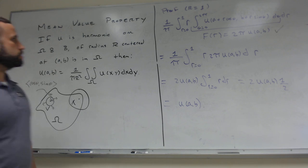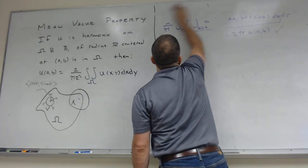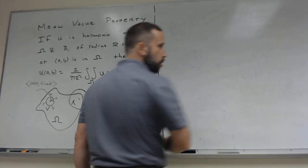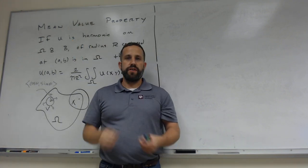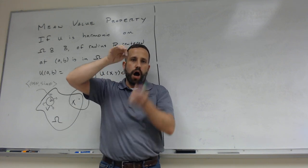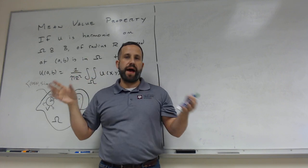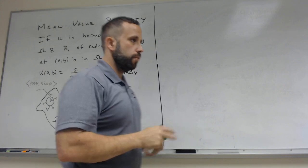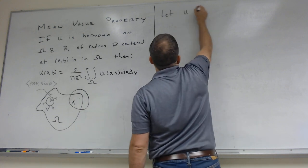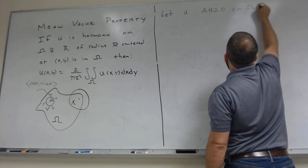We can talk about that in office hours, but I want you to think through it. Now this lets us prove something interesting. Intuitively, if U represents the concentration of something and the Laplacian of U is zero — in other words, U is a harmonic function — then there should be no humps. If U is diffusing and there's a hump, that hump should diffuse out. So mathematically speaking, there should be no local maxima or minima.